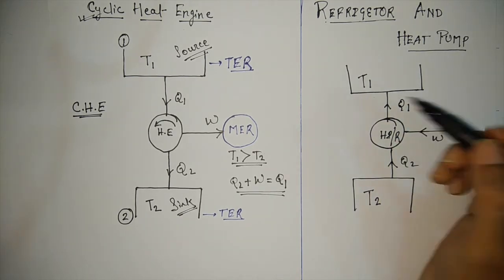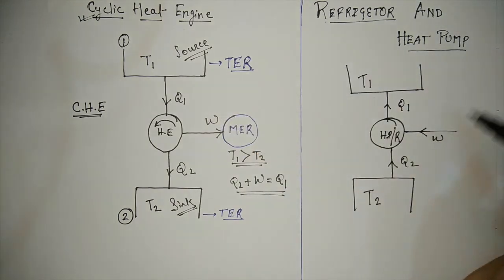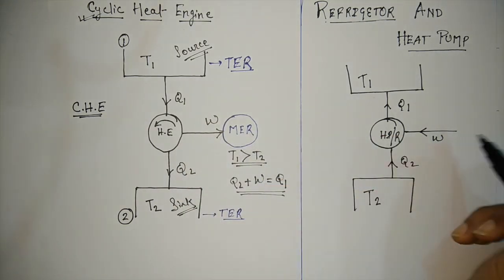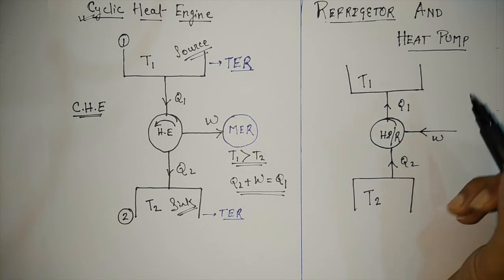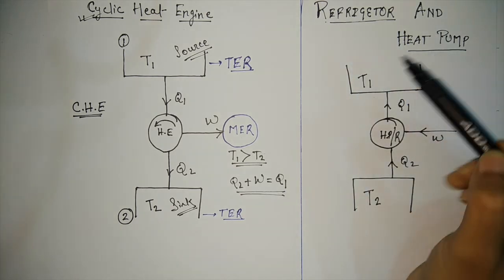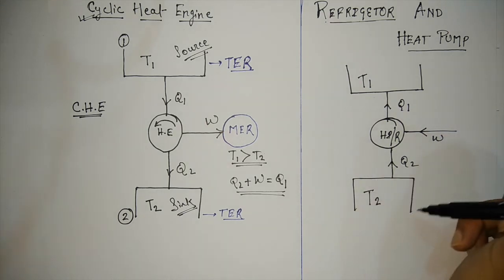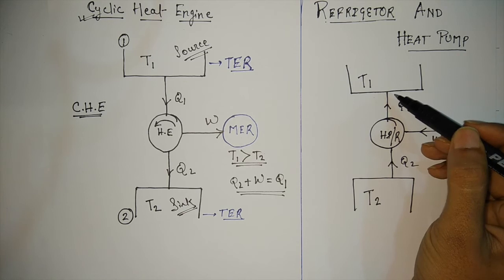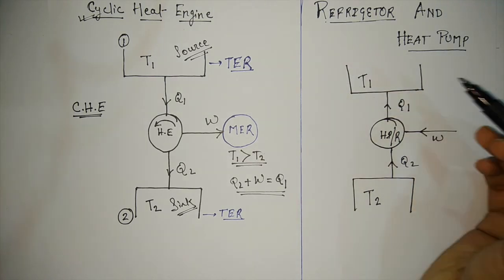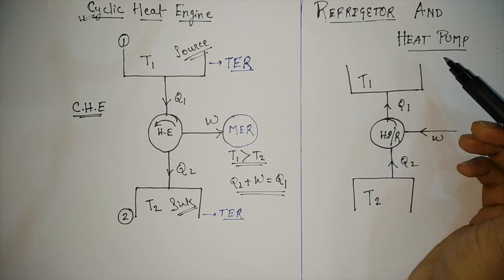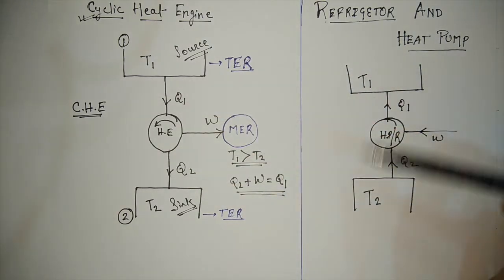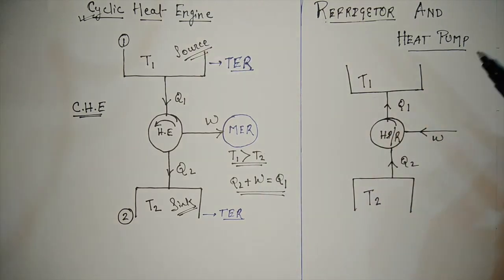The basic difference between the cyclic heat engine and the refrigerator and heat pump is that the direction is opposite — in the heat engine we get work out, and in the refrigerator or heat pump we need to supply work. A refrigerator cools body 2 to below the ambient temperature, while a heat pump delivers heat to body 1 at above the ambient temperature. That is the basic difference between the working of a refrigerator and a heat pump.